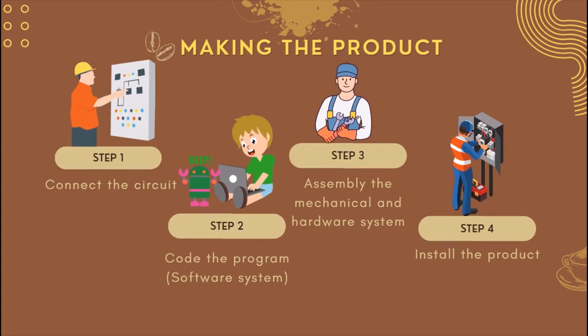For making the product: step one, we connect the circuit. Step two, code the program as a software system. Step three, assemble the mechanical and hardware system. And step four is to install the product.